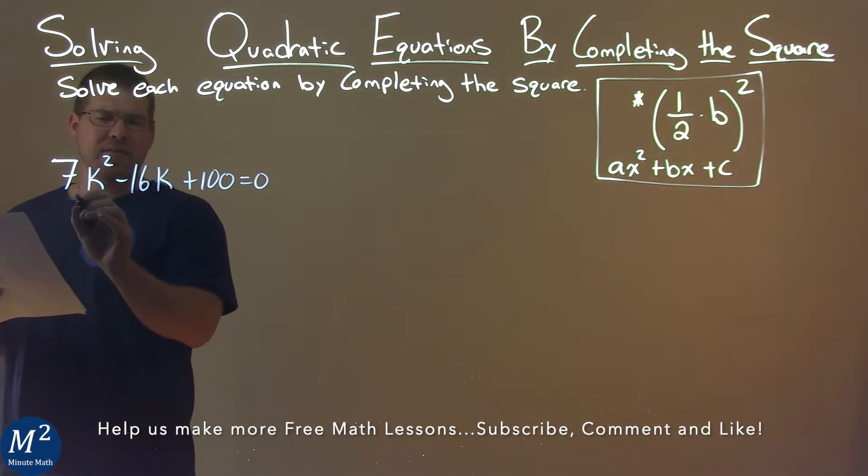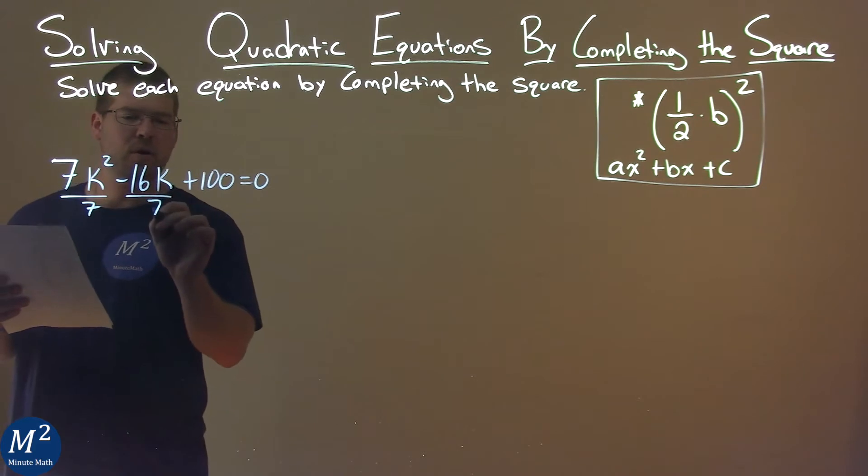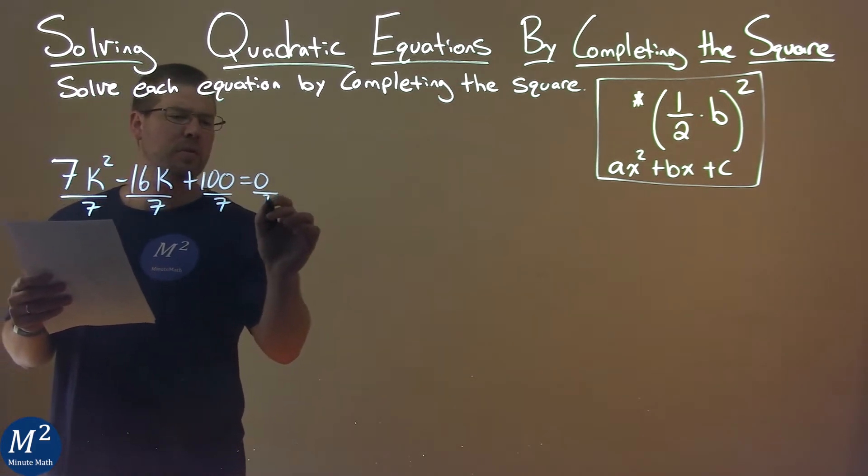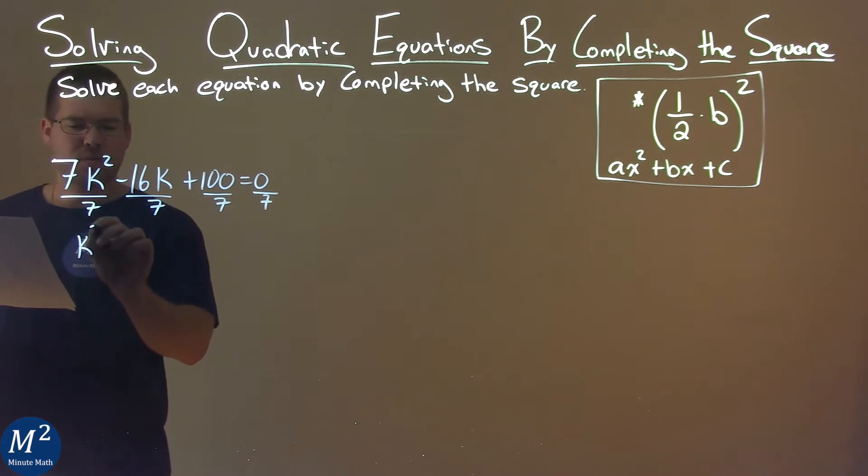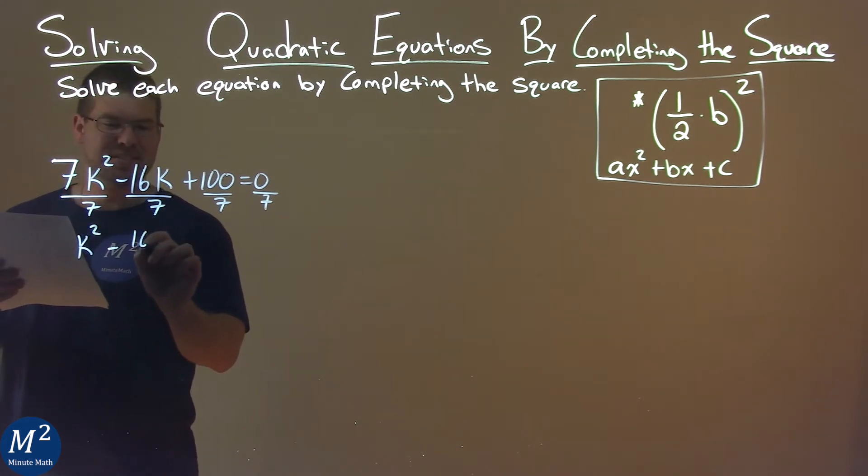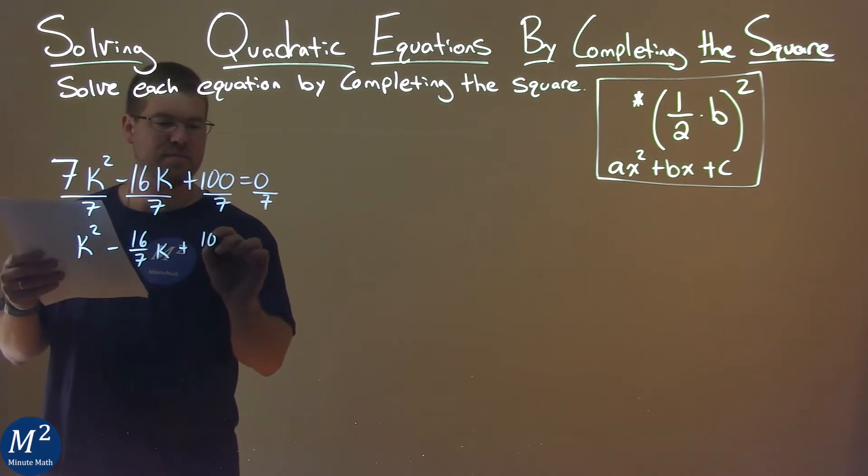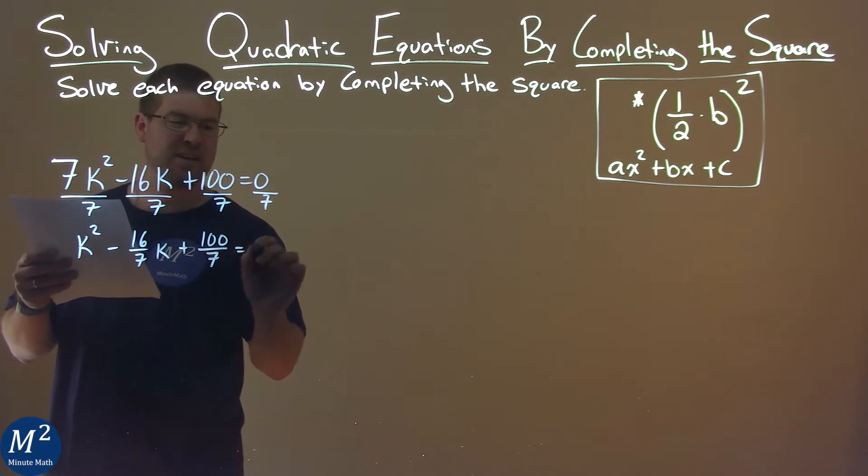I have an a value of 7. I'm going to divide that 7 to all parts, or really both sides of the equation. Coming down, we have just k squared here, minus 16 sevenths k plus 100 sevenths, and that equals 0.